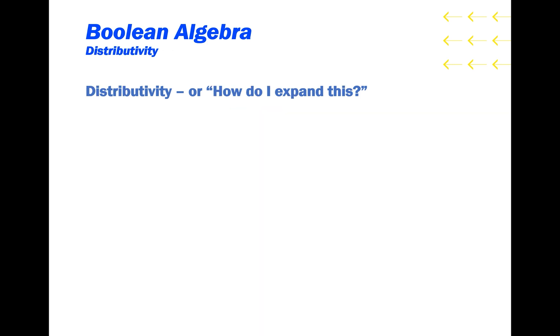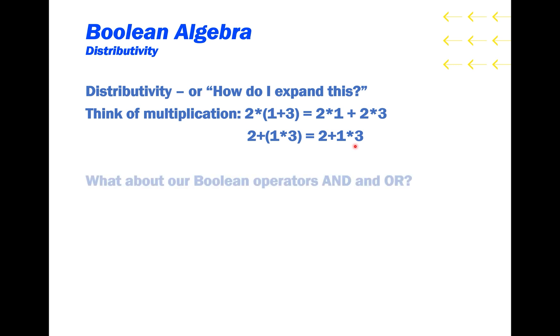Next we'll look at distributivity, or how can I expand this? If you think of multiplication, 2 times 1 plus 3, you can expand the 2 into the 1 plus 3 to get 2 times 1 plus 2 times 3. However, 2 plus 1 times 3 does not get expanded into the brackets.